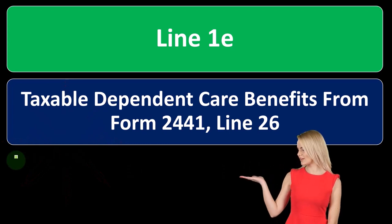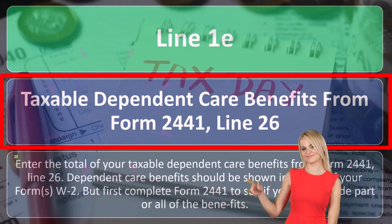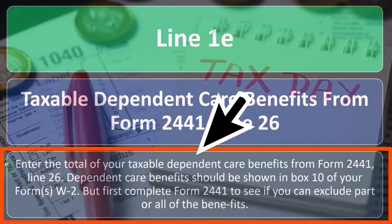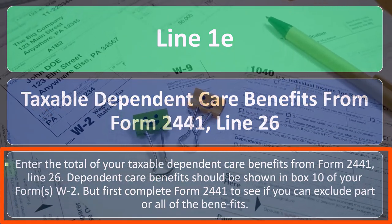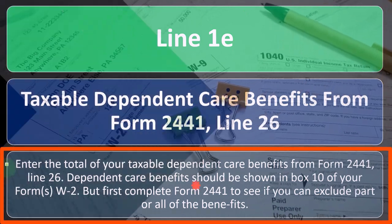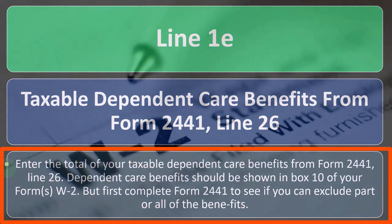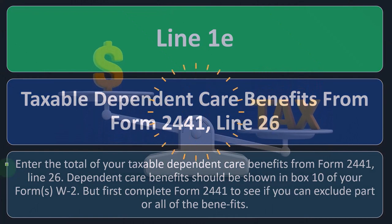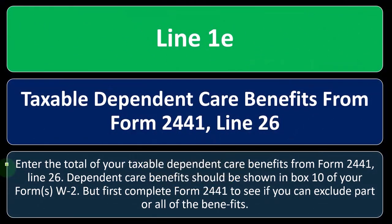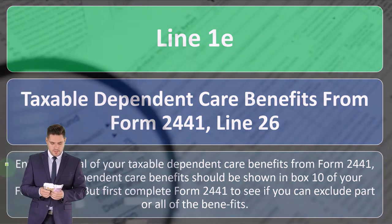Line 1E: Taxable dependent care benefits from Form 2441, line 26. Enter the total of your taxable dependent care benefits from Form 2441, line 26. Dependent care benefits should be shown in Box 10 of your Form W-2. If you're using software to help with data input, it'll help you show the boxes and populate this information on the tax return. Software is helpful to better think through what is happening, and we may run some scenarios on this in a future presentation.